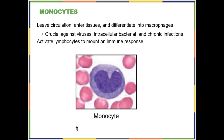Monocytes: when they're in the bloodstream they're called monocytes. These are the cells most likely to leave the bloodstream, and when they're out of the bloodstream we call them macrophages. There are macrophages in your lungs, liver, spleen, and all your lymphatic organs like tonsils and lymph nodes — all digesting viruses, bacteria, or dead red blood cells. Any physical object you don't want outside of your bloodstream, your monocytes take care of.